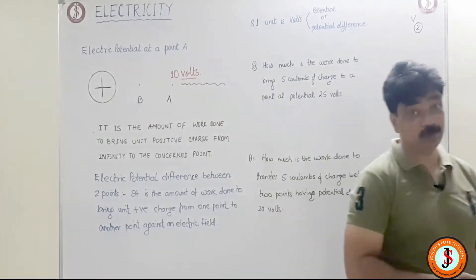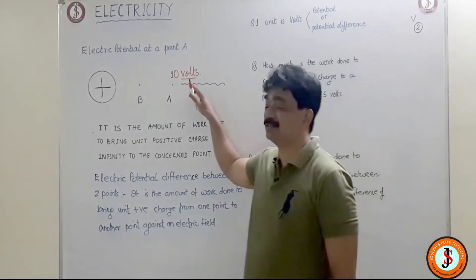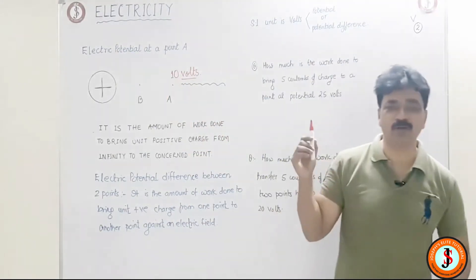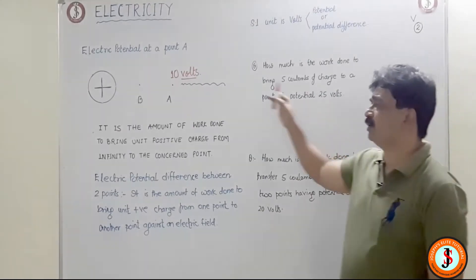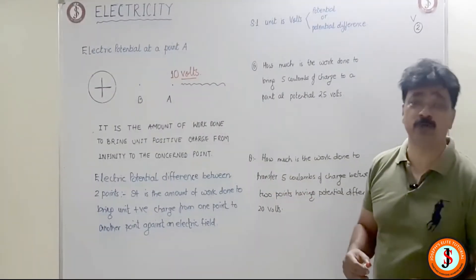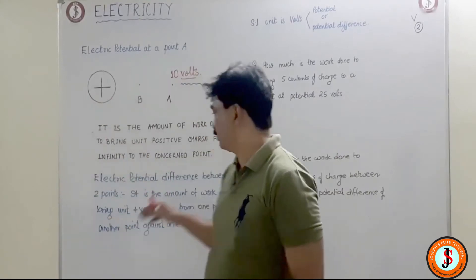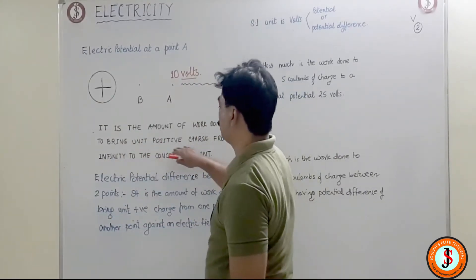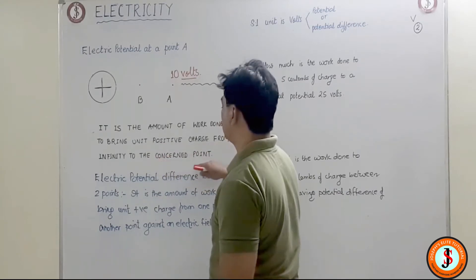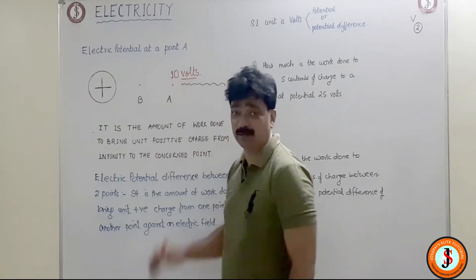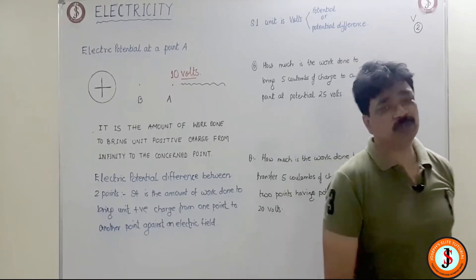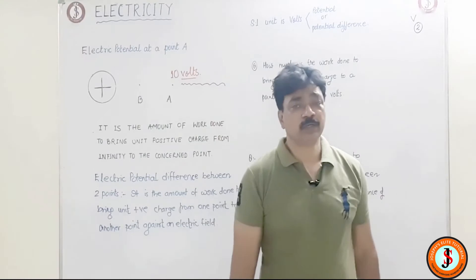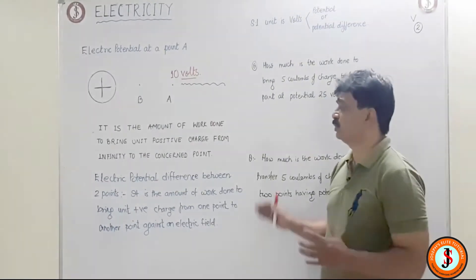You can understand it the other way: if I say the potential of point A is 10 volts, what do you mean by this? You can simply say if I bring one Coulomb of charge from infinity till A, I will have to do 10 joules of work against the electric field. It is the amount of work done to bring unit positive charge from infinity to the concerned point, against an electric field. We take positive field as reference — it's just by convention.